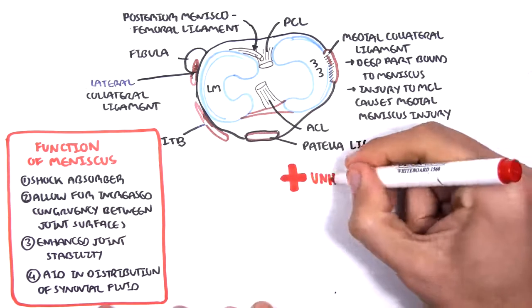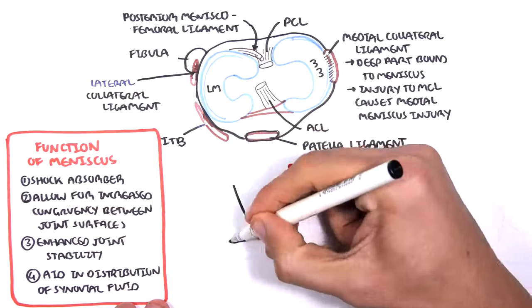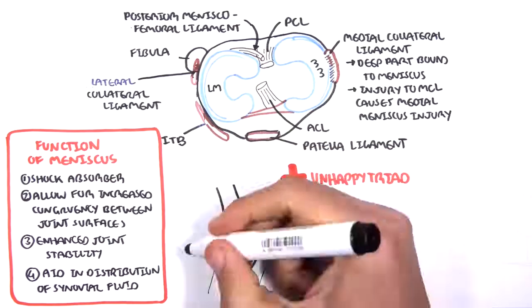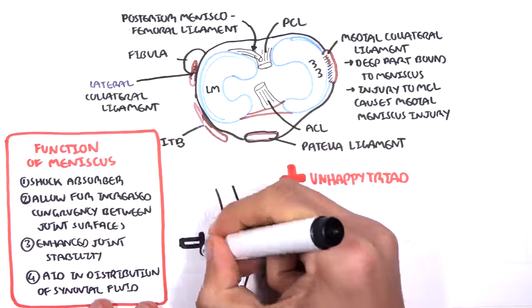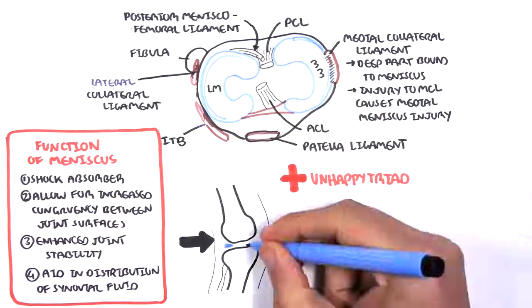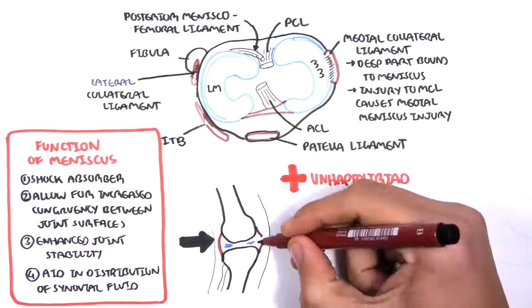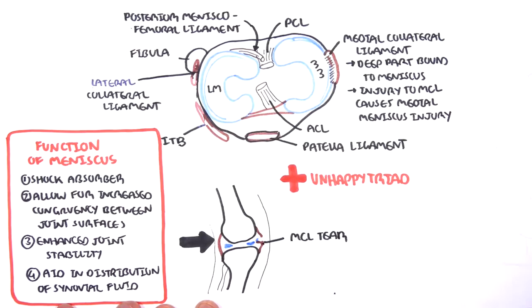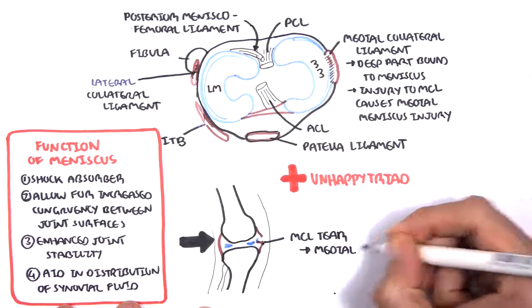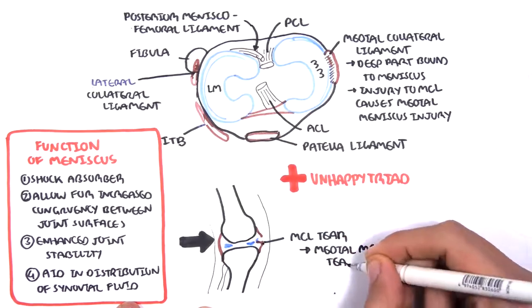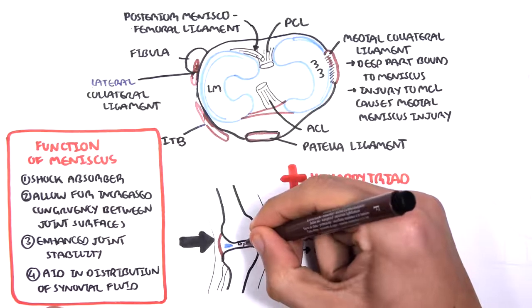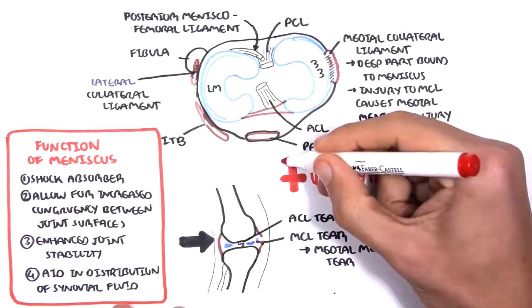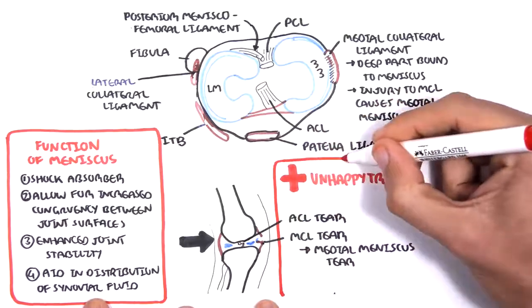Clinical significance. There's something called the unhappy triad or the O'Donoghue triad. And this is a serious injury coming from the lateral part of the knee joint with the knee twisting. And this can cause what is known as the unhappy triad. The unhappy triad consists of a medial collateral ligament tear which will then tear the medial meniscus. And the injury will also result in an anterior cruciate ligament tear. This is an indication for surgery.